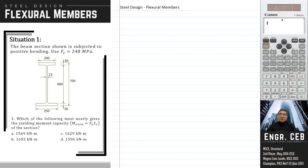The formula for the yield moment capacity is My equals Fy times Sx, where Sx is the elastic section modulus.